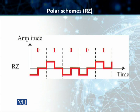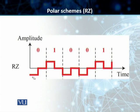In the return to zero scheme, it uses three values instead of two values — three voltage levels instead of two voltage levels. So we have a negative, a zero, and a positive. For every single bit, we are using three voltage levels in this particular case instead of two voltage levels, as was the case with NRZ-L.